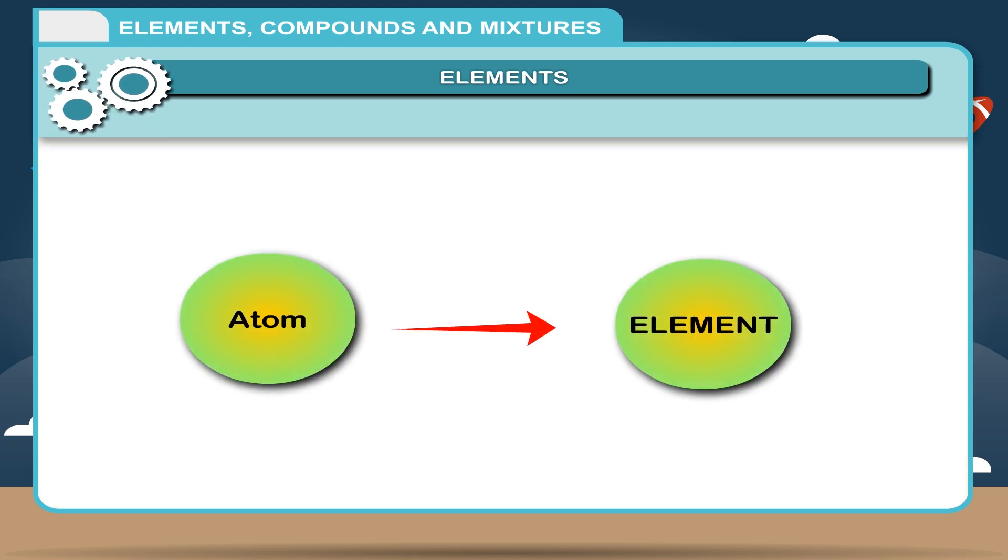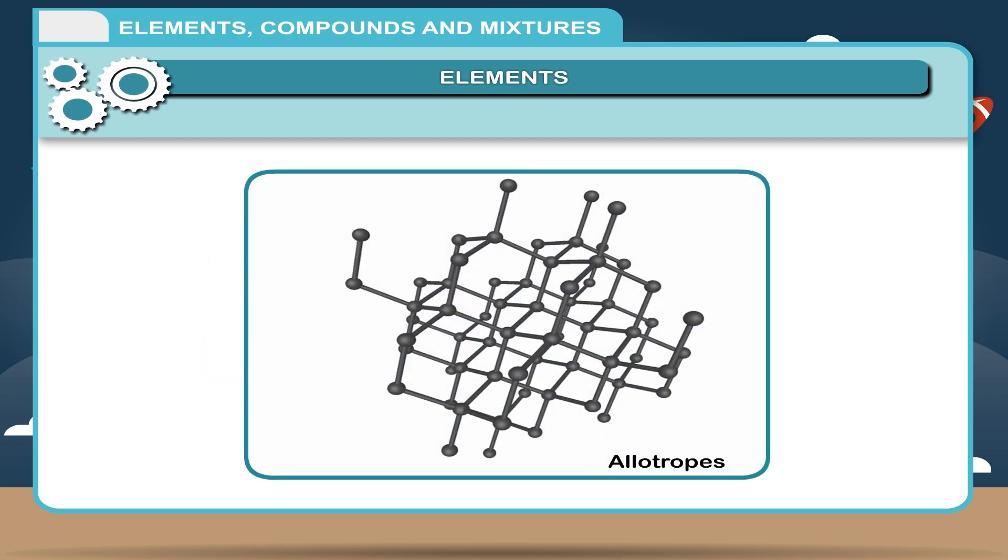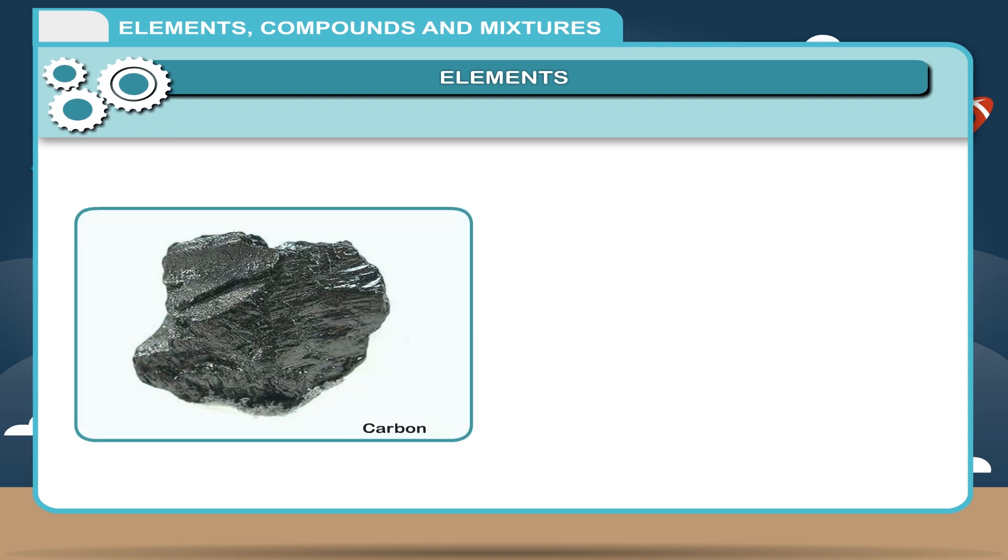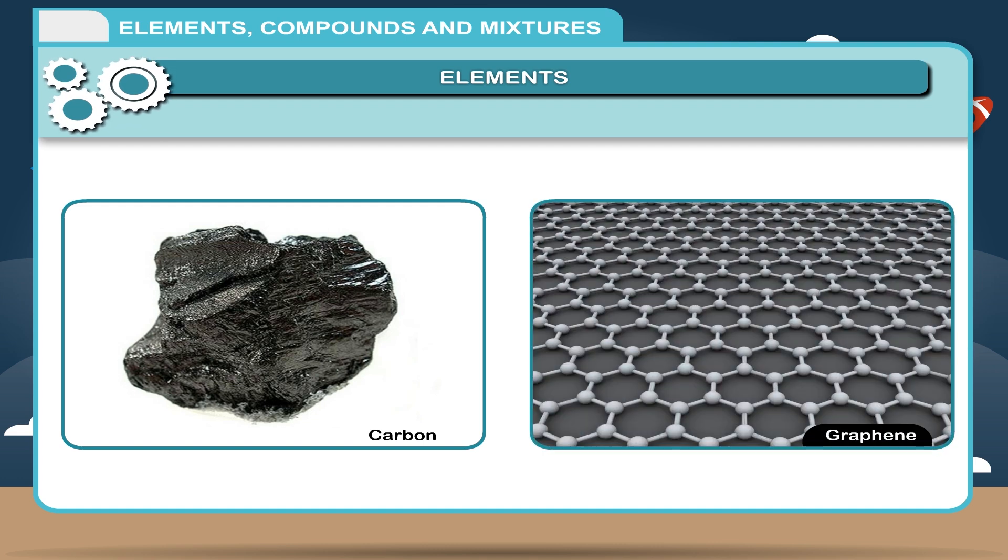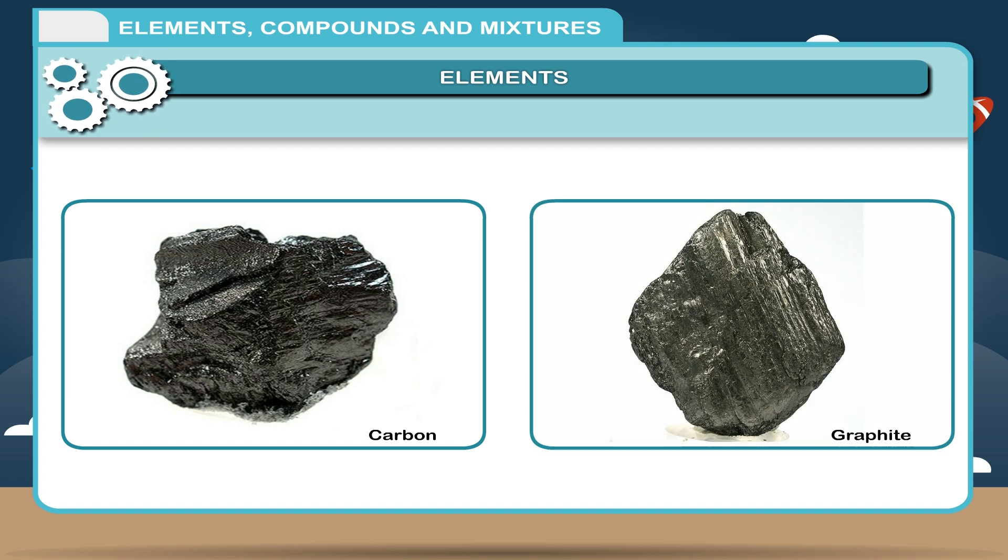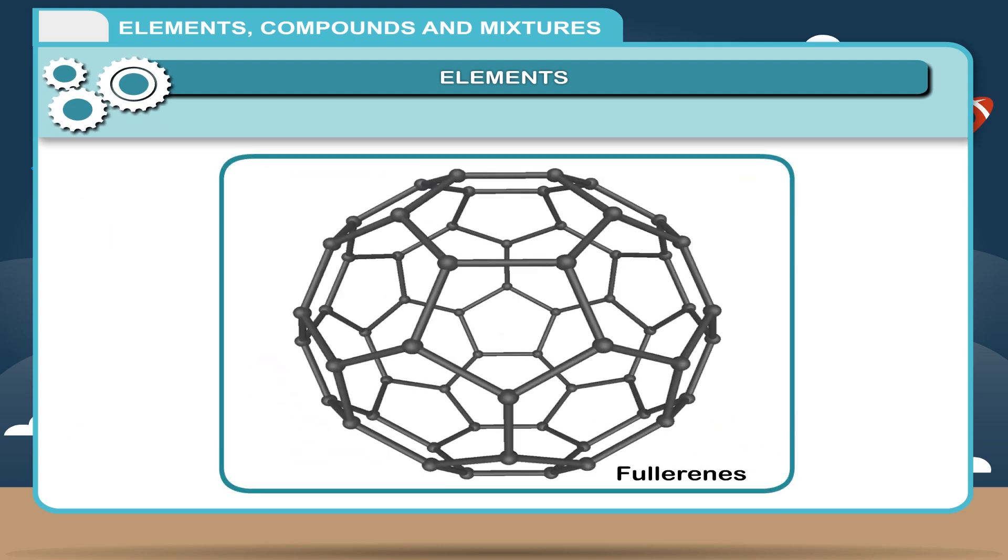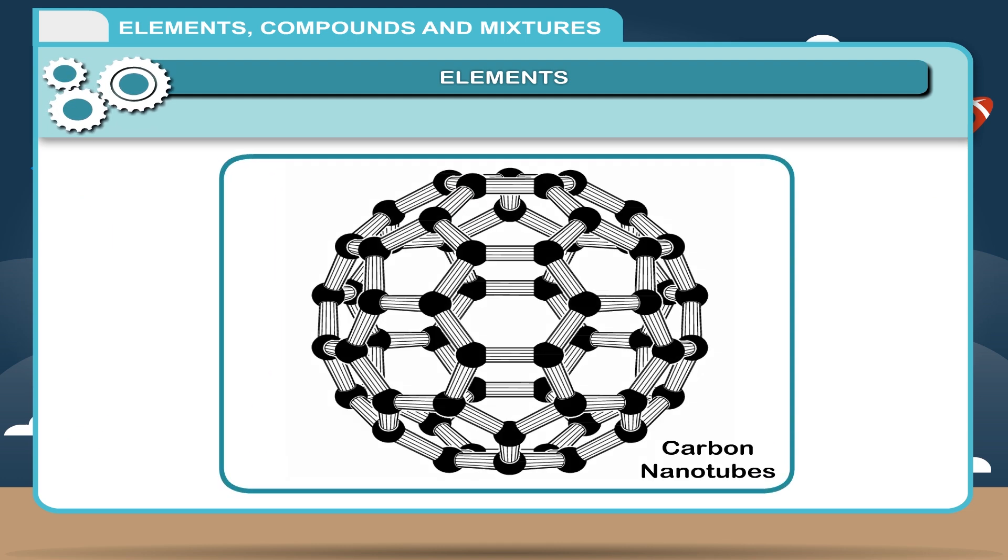Atoms of chemically pure elements may bond to each other chemically in more than one way, allowing the pure element to exist in multiple chemical structures, spatial arrangements of atoms, known as allotropes, which differ in their properties. For example, carbon can be found as diamond, graphite, graphene which is a single layer of graphite that is very strong, fullerenes which have nearly spherical shapes, and carbon nanotubes.